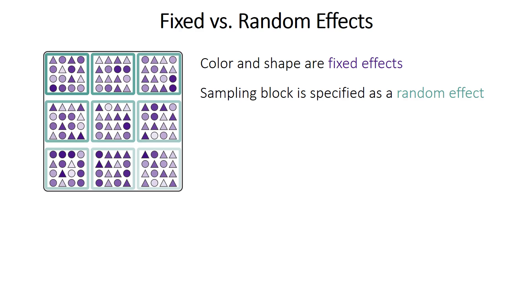In the previous example, the color or shade of purple for the points and the shape of the points are treated as fixed effects, and the sampling block — the green boxes — could be treated as random effects. There really isn't an objective rule for determining this. What counts as a fixed effect in one situation might be a random effect in another, but there are some guidelines.